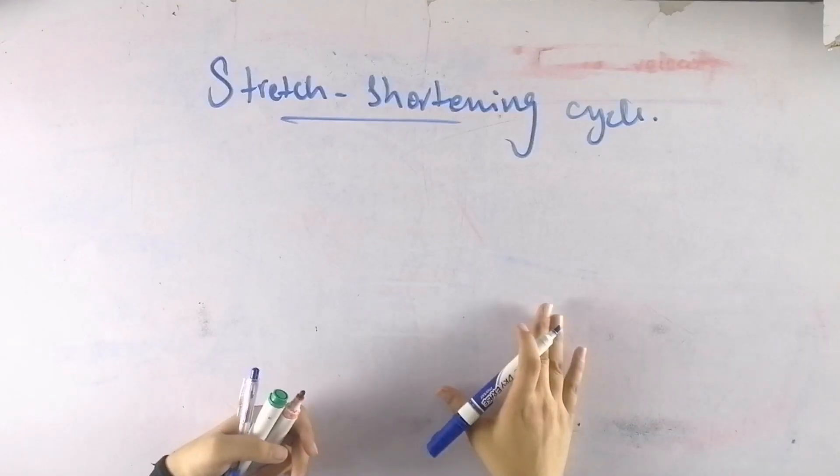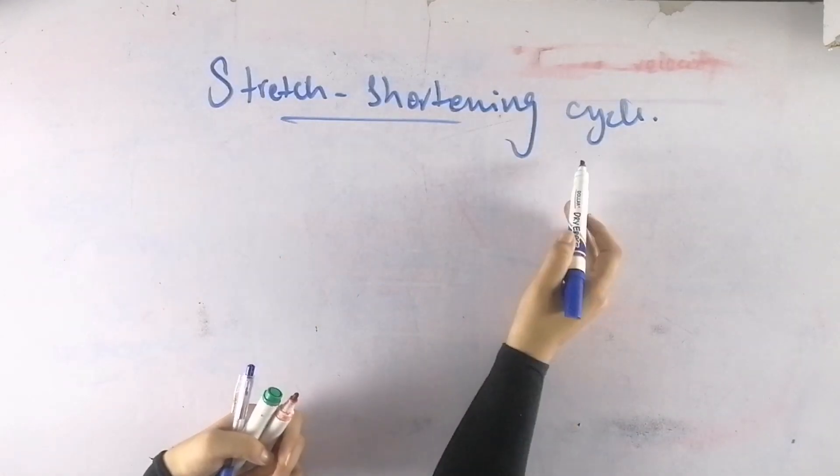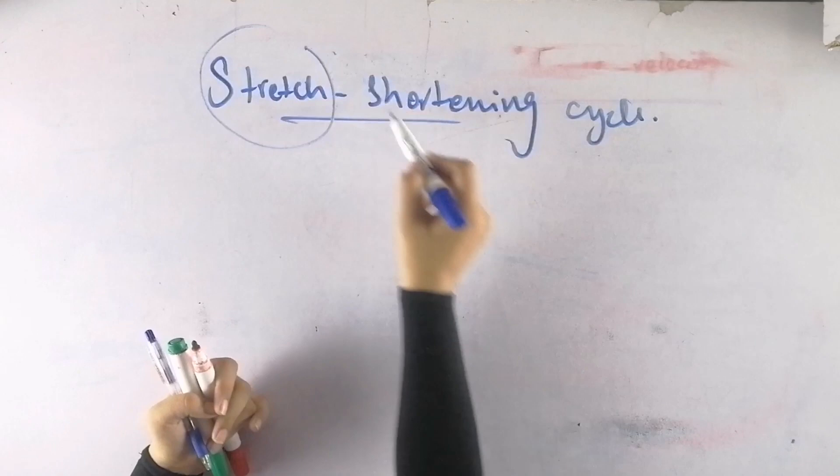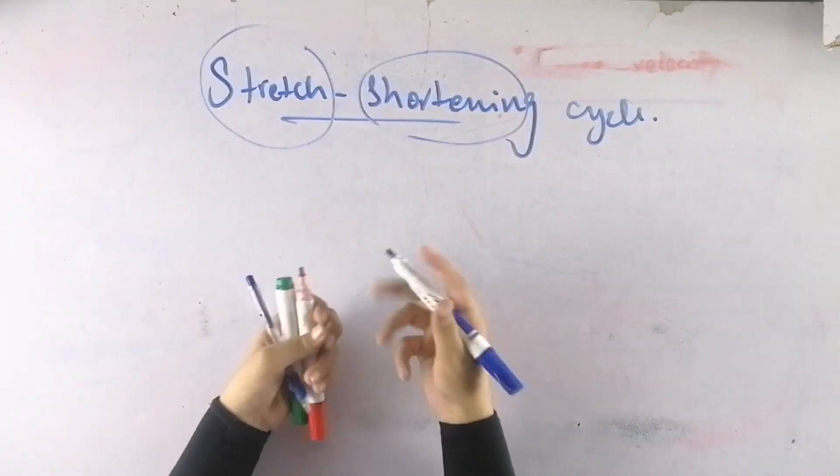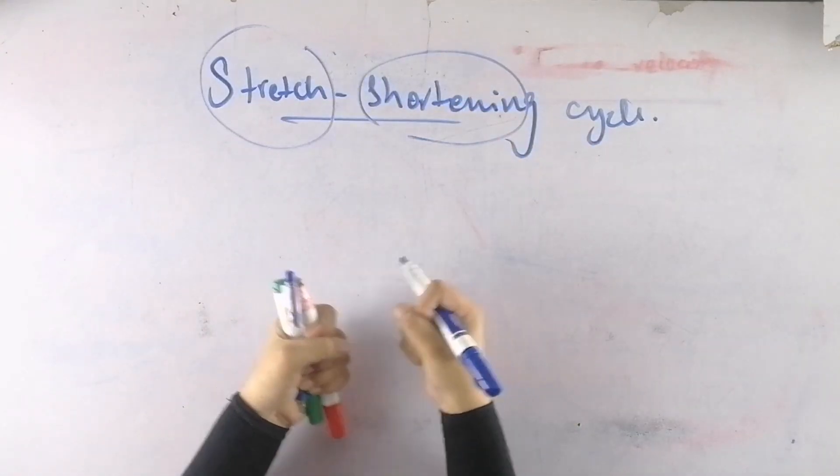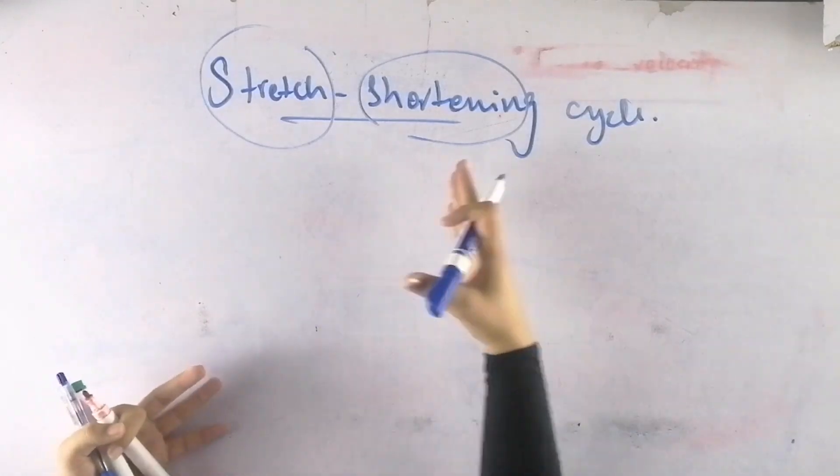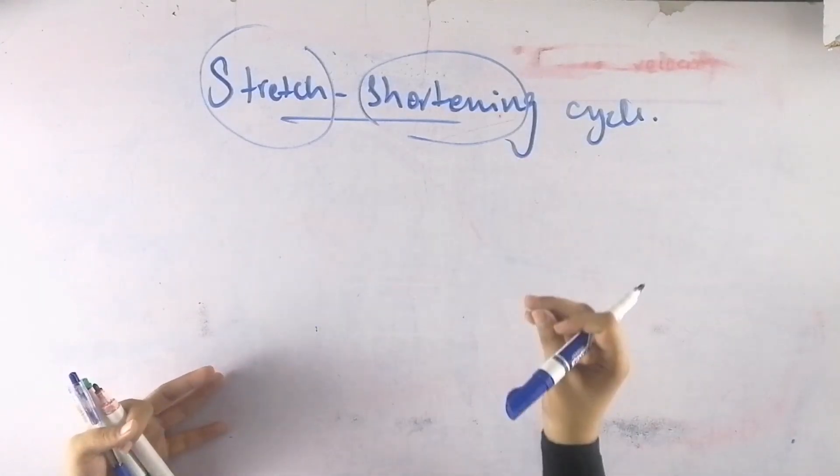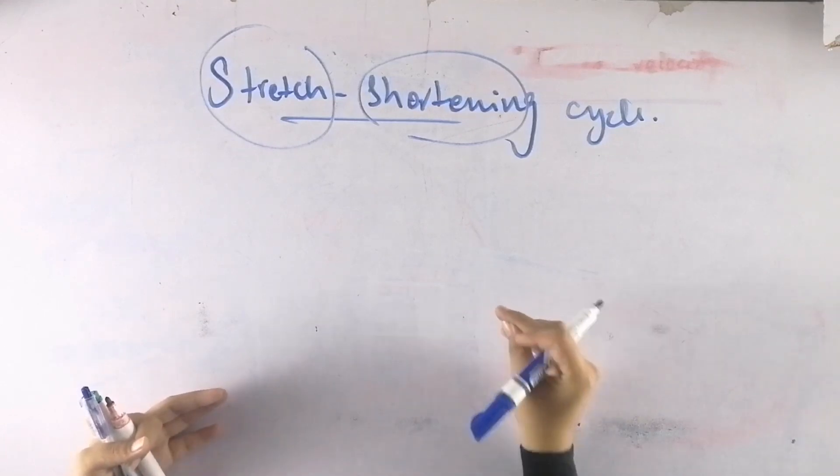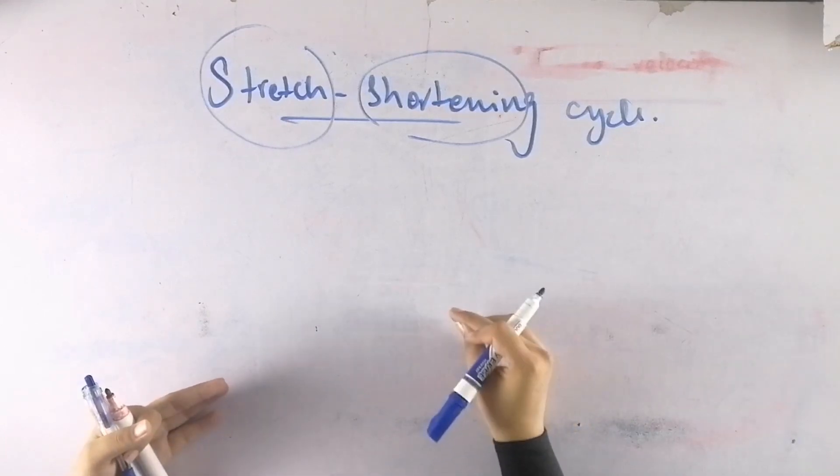The topic of this video is stretch-shortening cycle. What does it mean? To stretch is to increase length, and shortening is the opposite. The stretch-shortening cycle is basically any movement in which we have concentric movement, but before that we stretch our muscles first.